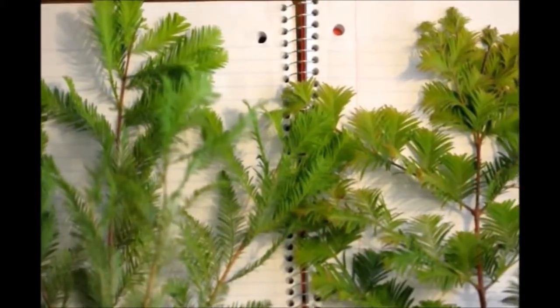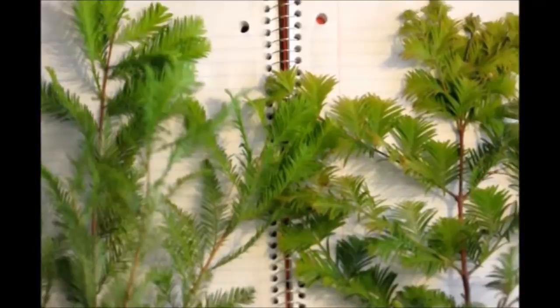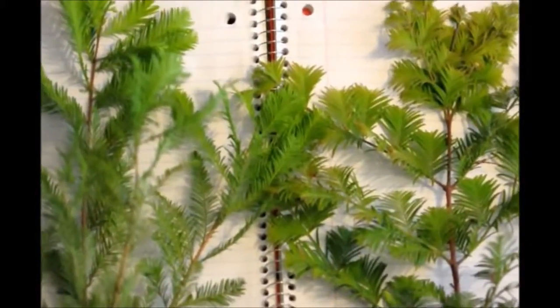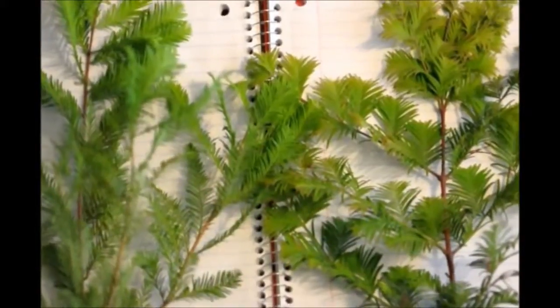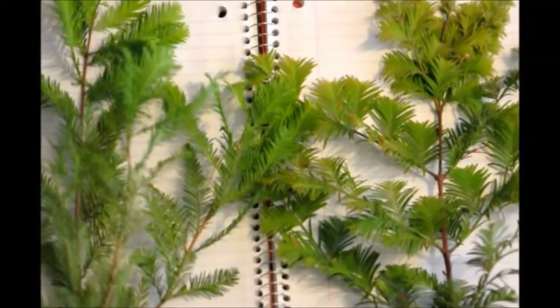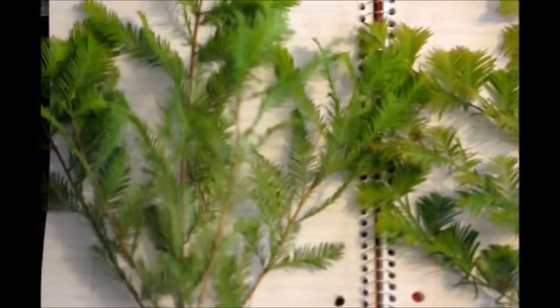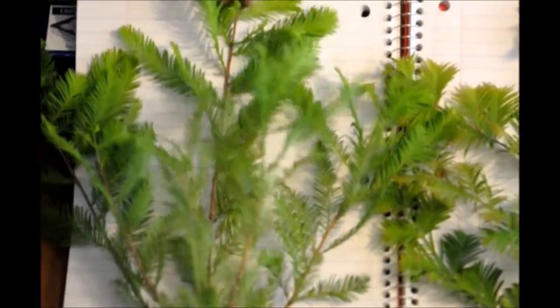To tell the two differences apart, the first thing we always look at is to see how the leaves are arranged on the stem. We call it either opposite, which is what the Dawn Redwood is, and alternate, which is what the Bald Cypress is.